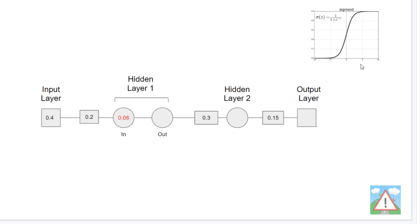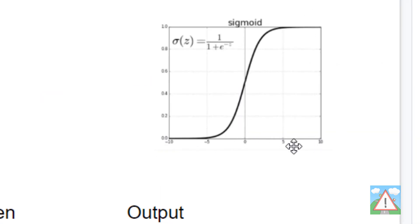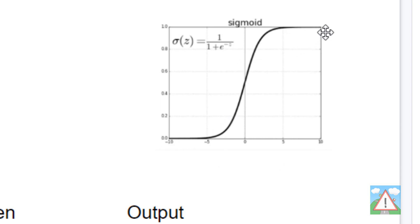There are lots of different kinds of activation functions. We're using one of the most popular, called a sigmoid. Essentially what that does is take the value — in this case 0.08 — and apply the formula 1 over (1 + e to the minus 0.08), and that is then our output value. In terms of normalization and non-linearity, what exactly is the sigmoid doing? If you look at the graph, along the x-axis we have our inputs and along the y-axis our outputs.